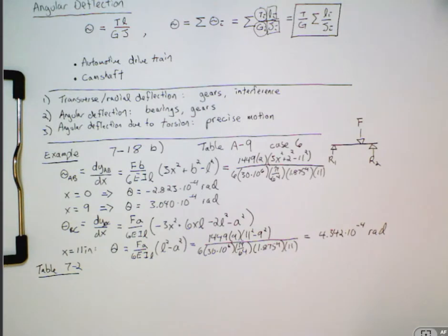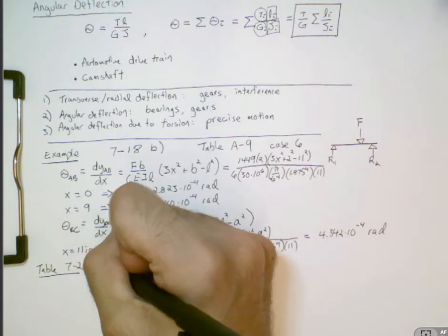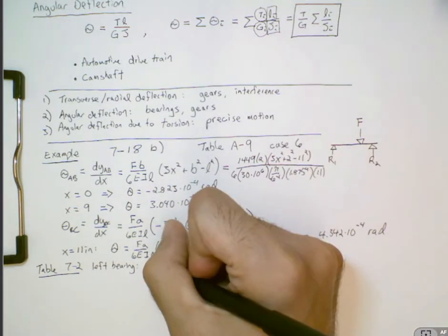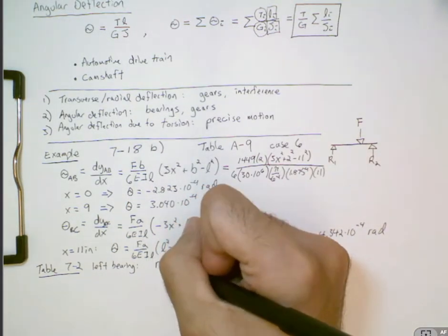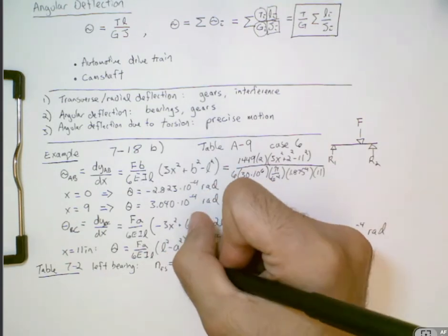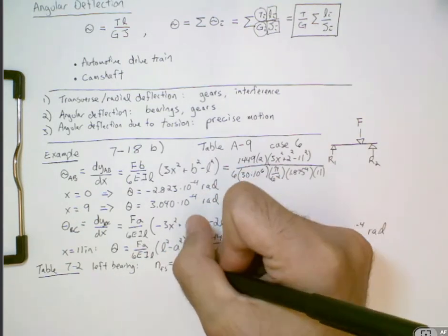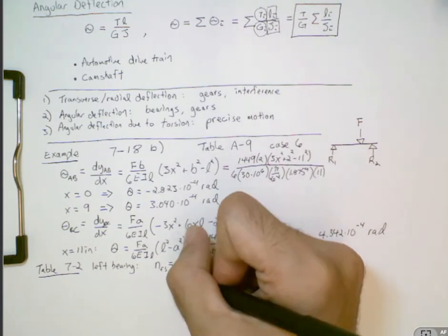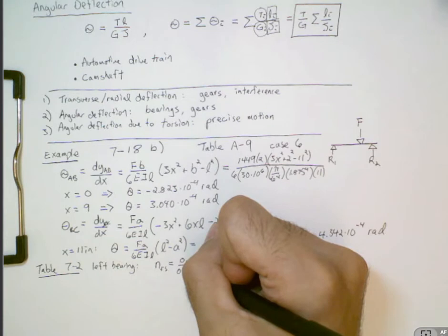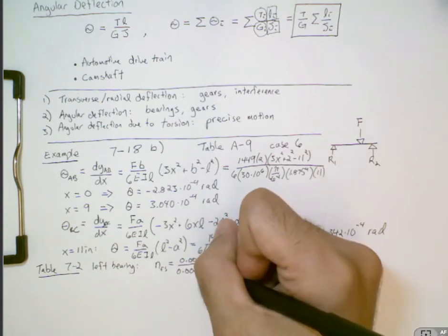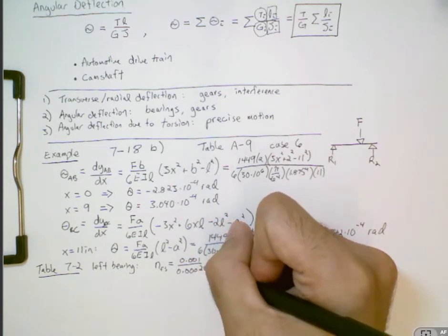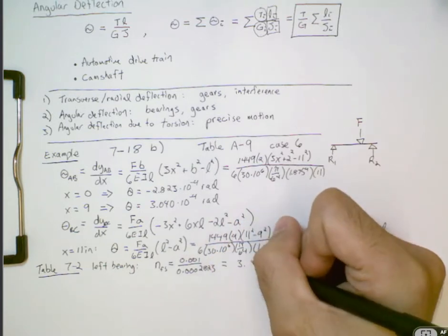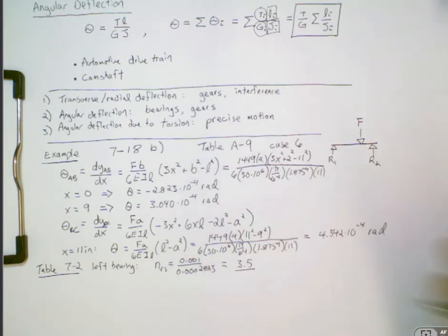So first, let's look at the left bearing and see what the design factor or the factor of safety is in this case. And so if we look up in the table, the allowable slope is 1 milliradian and then the actual slope is less than that. And the safety factor is 3.5. So we're fine at the left bearing.